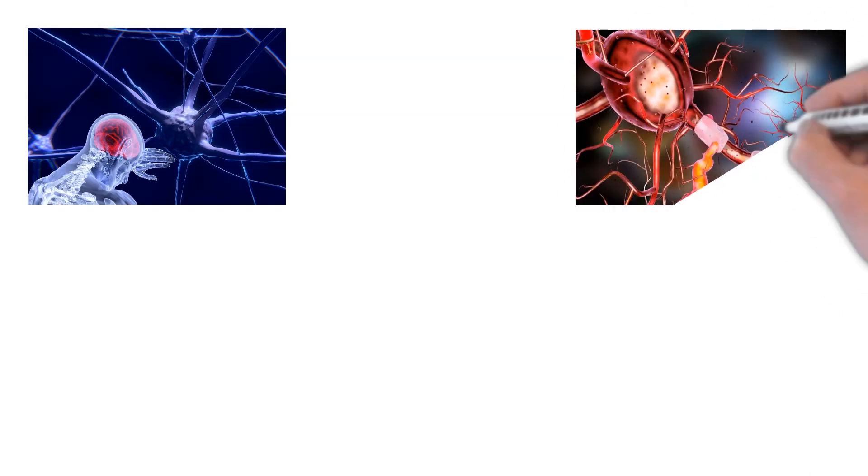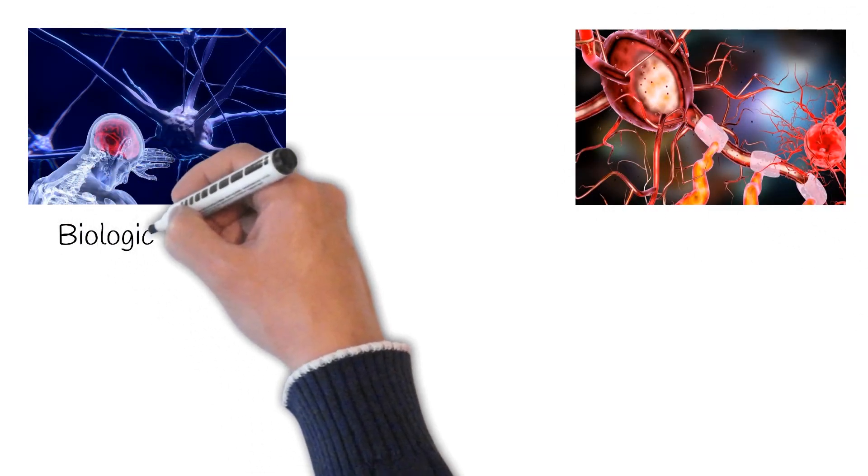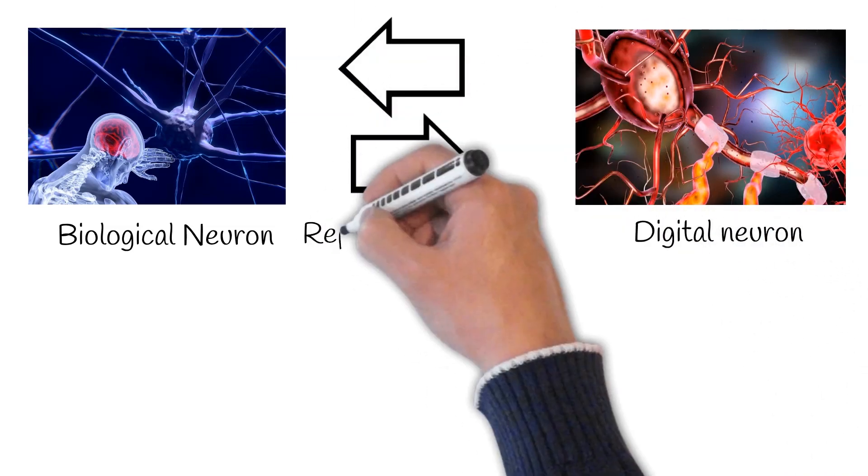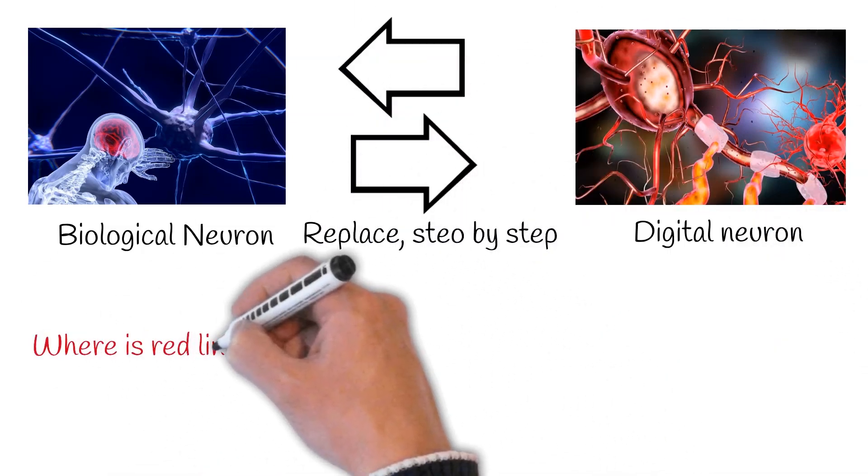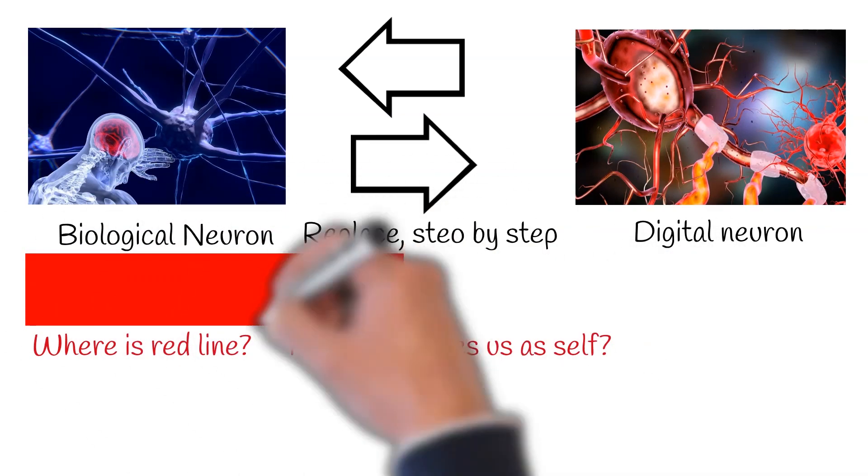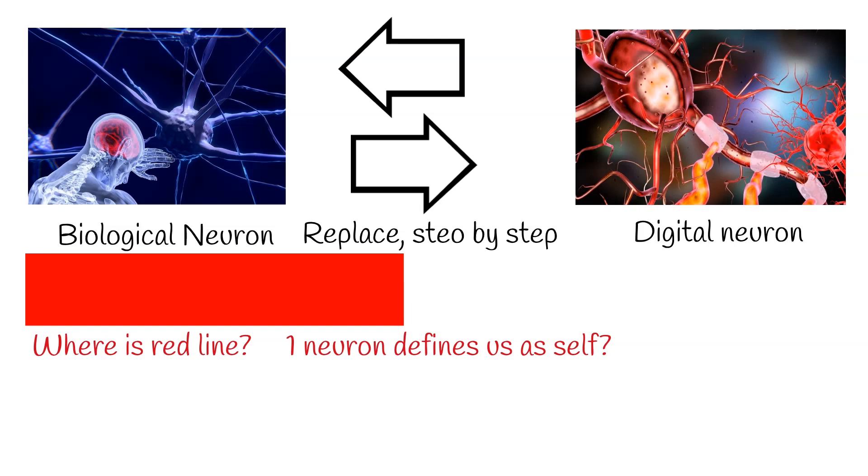And a final question. But what if one day we can replace our brain by digital brain, neuron by neuron? If each of our neurons will be replaced gradually and consecutively by digital neuron, where will be the red line when we will lose self? And we will become copy of ourselves? Which single neuron is defining us as self?